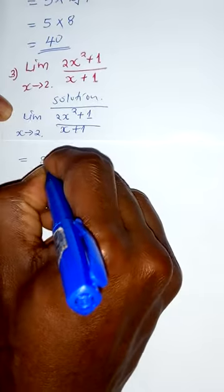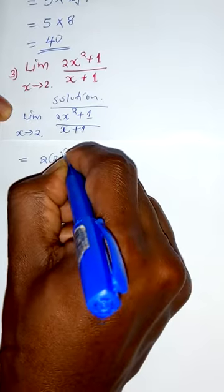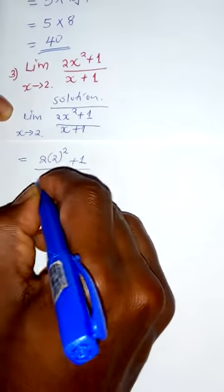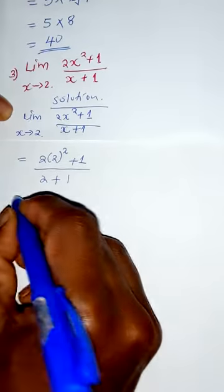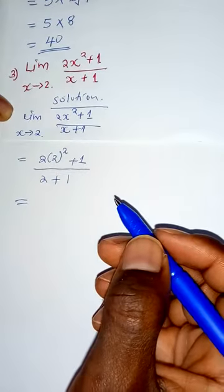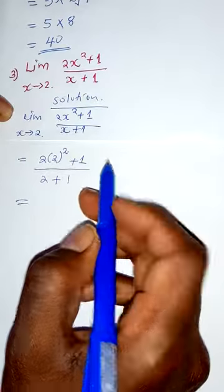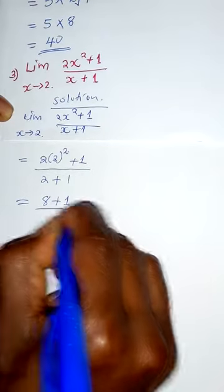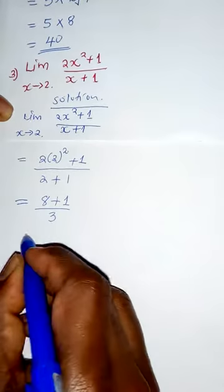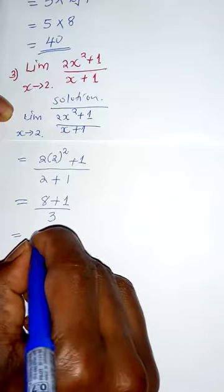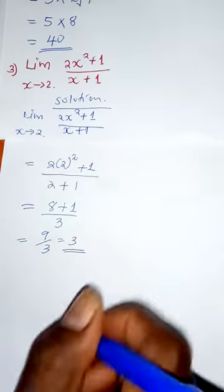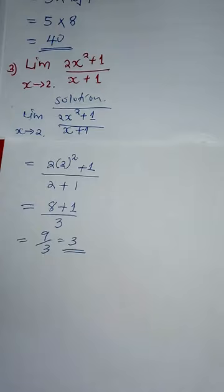We get 2 times 2 squared plus 1, over 2 plus 1. 2 squared is 4, times 2 gives 8, plus 1 is 9. The denominator is 2 plus 1 equals 3. So 9 over 3 gives us 3. Our answer is 3. Thank you for watching; subscribe for more videos.